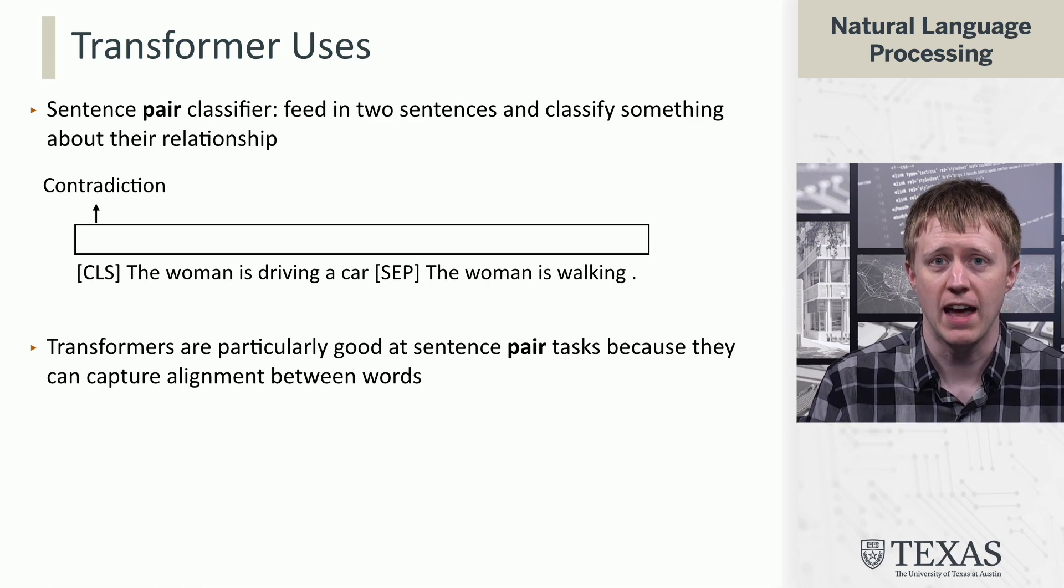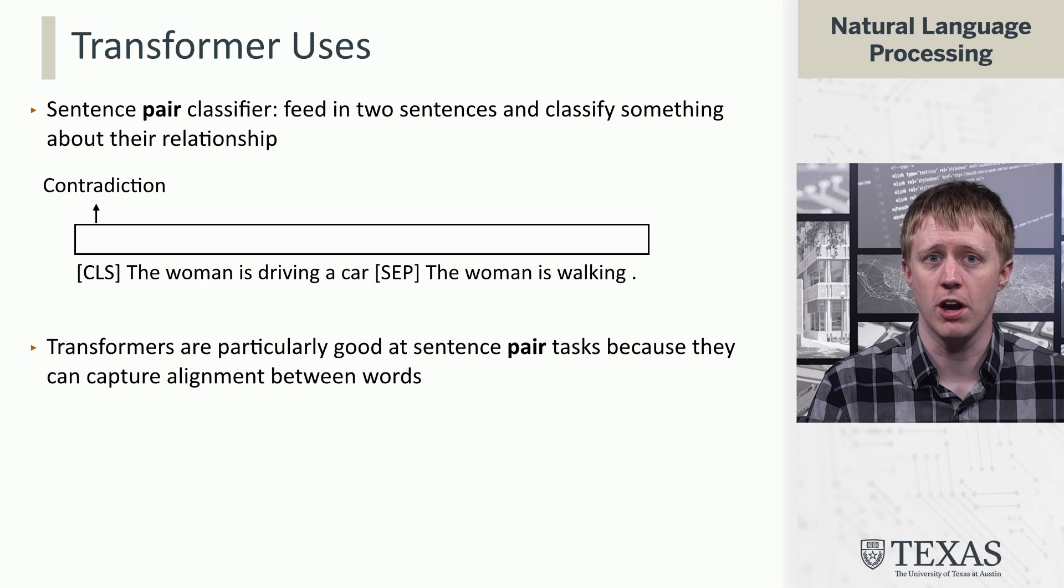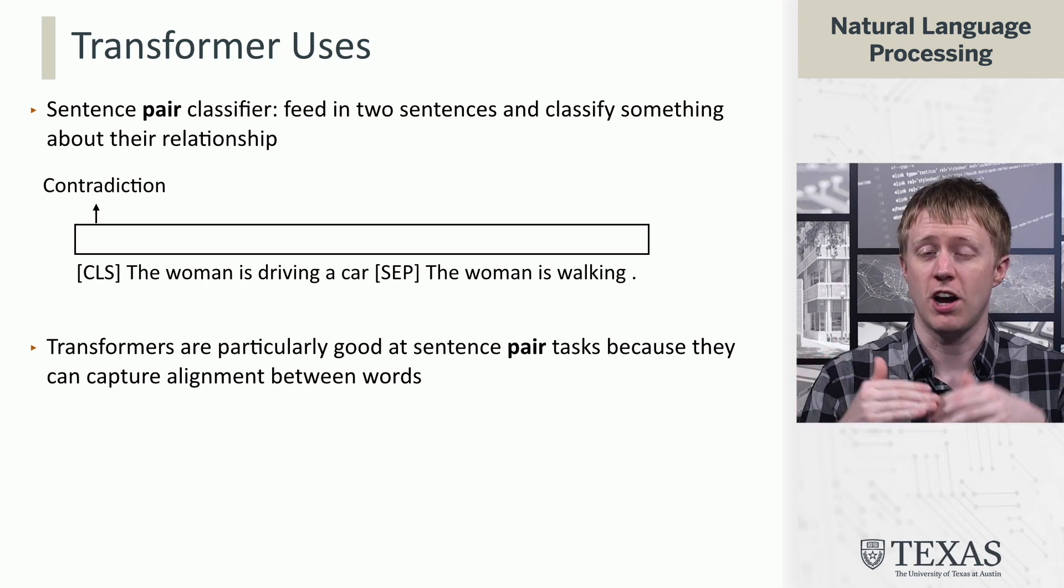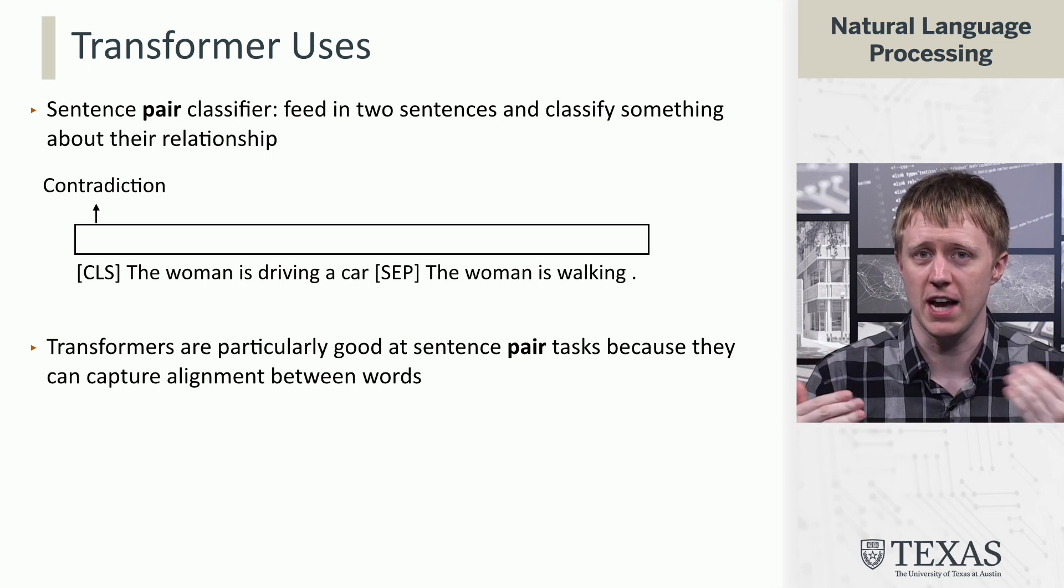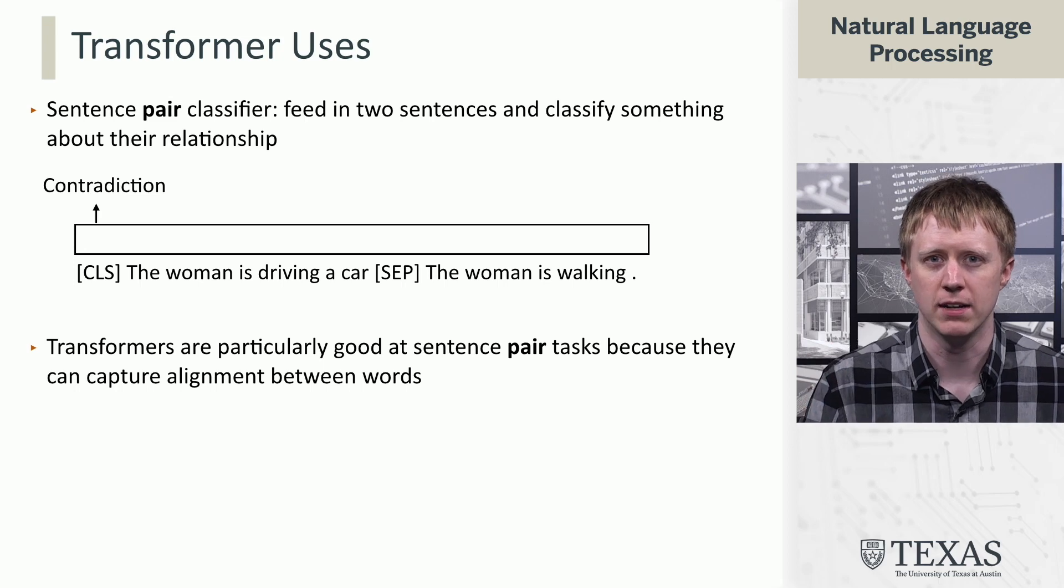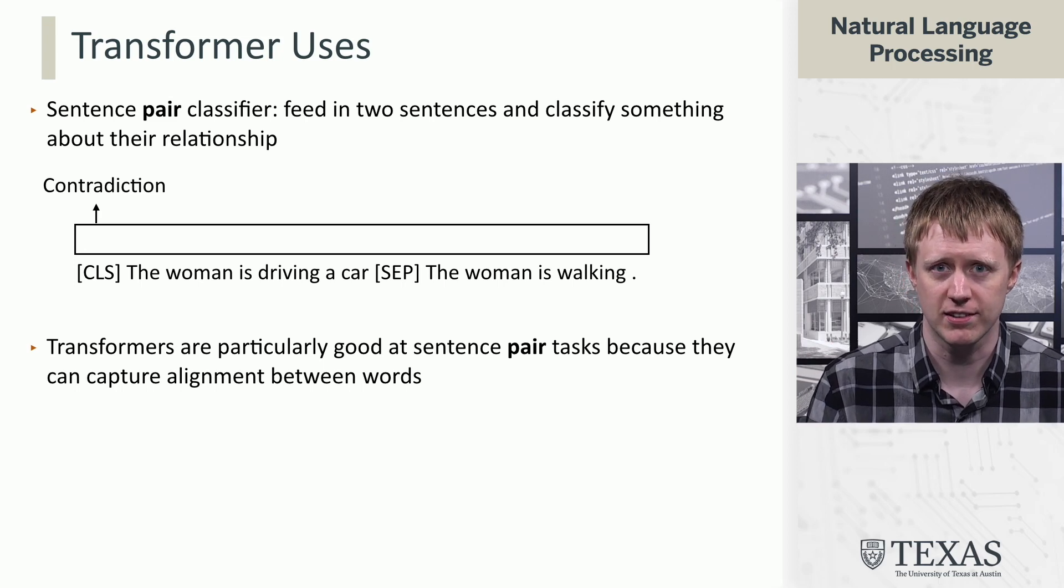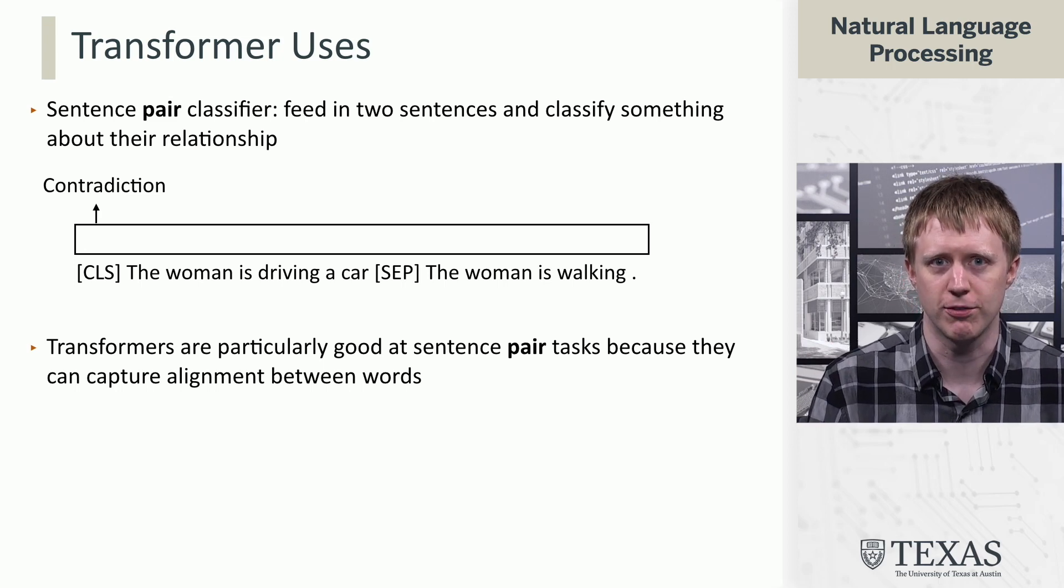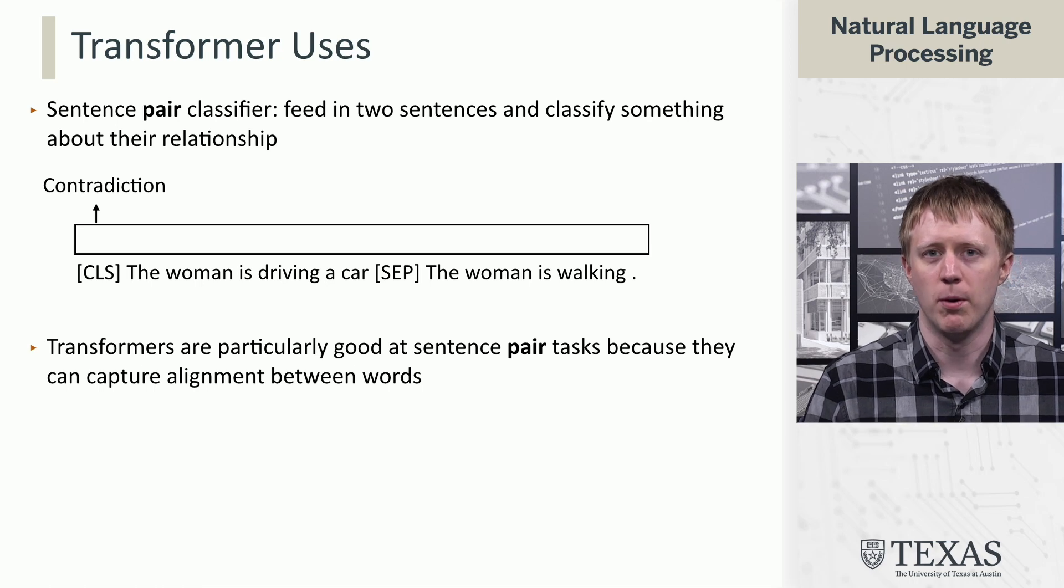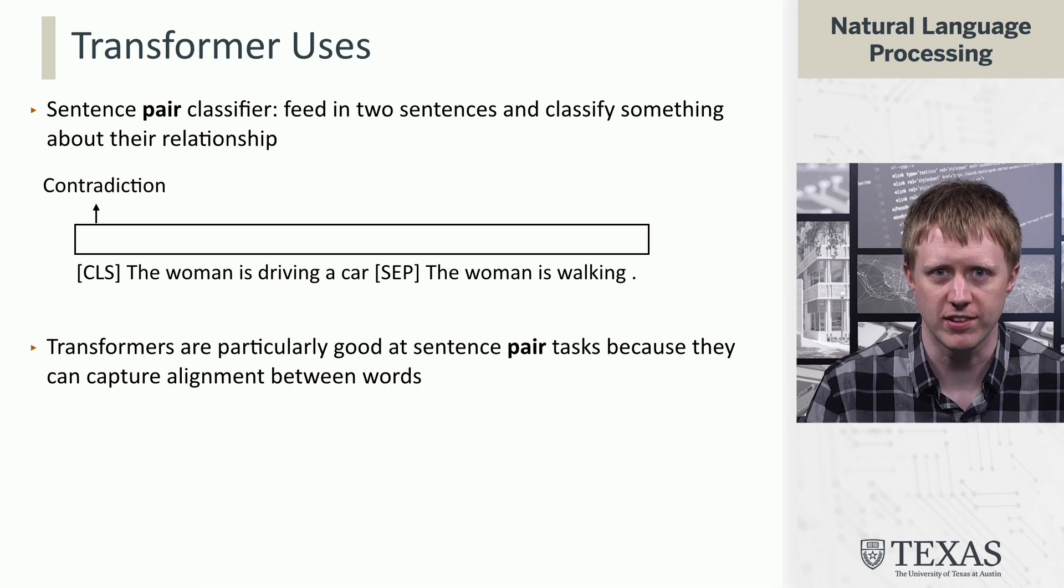So we have a pair of sentences. The woman is driving a car and then the woman is walking. And what we want to know is, does the second sentence contradict the first? Is it implied by the first or are they unrelated? And in this case, it contradicts the first because the woman can't be driving a car and walking at the same time.